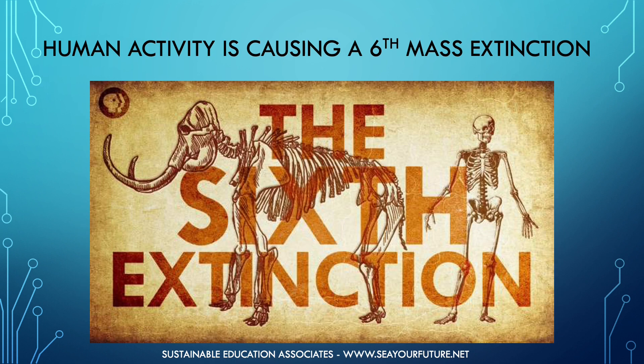However, it doesn't take an advanced degree in environmental science to make the correlation between human activities and today's ever-rising rate of species extinction. Scientists are now calling this era the beginning of the Earth's sixth mass extinction, and it's the first time that such an event is being caused by one species.